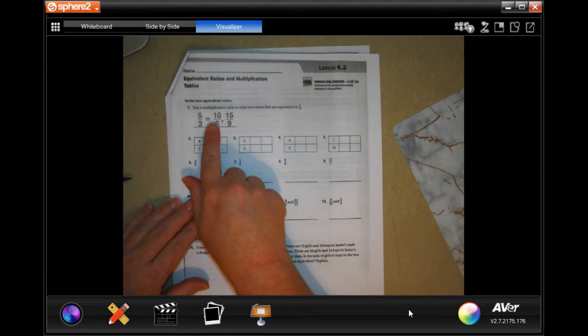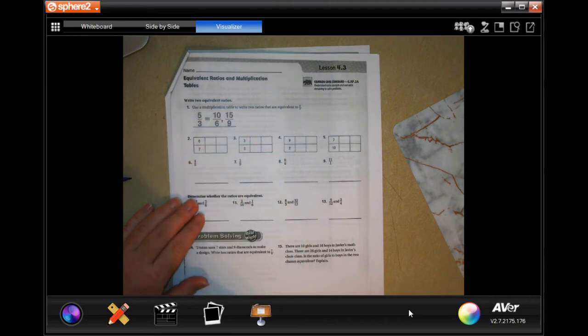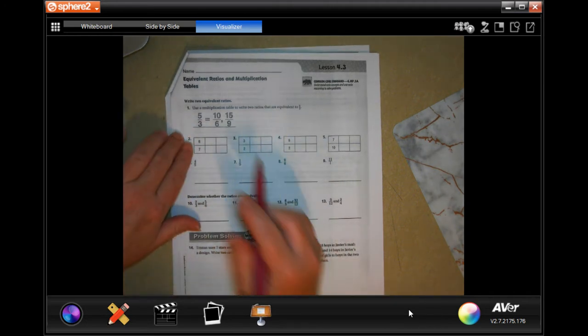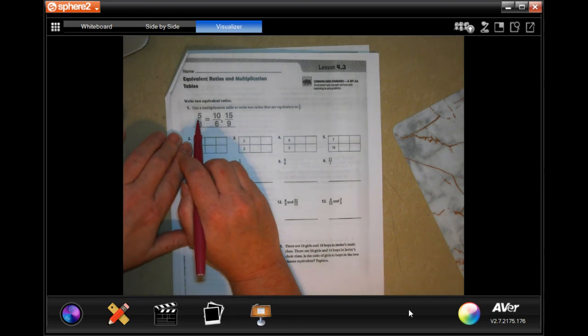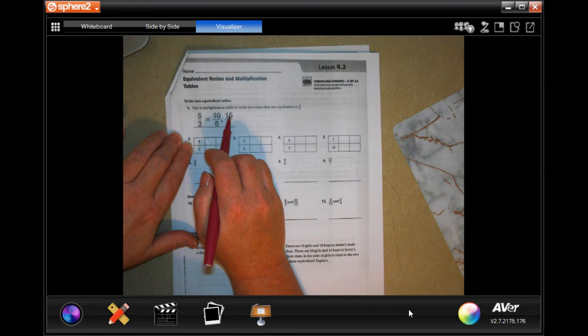So you'll see that all we're doing is multiplying by whatever number is right here. So 5 times 1 is 5, 5 times 2 is 10, 5 times 3 is 15.